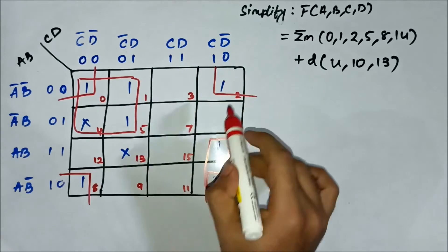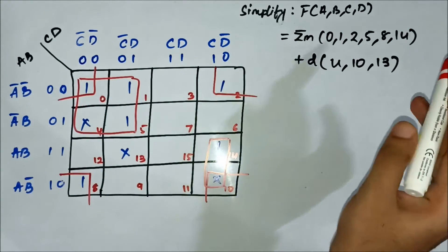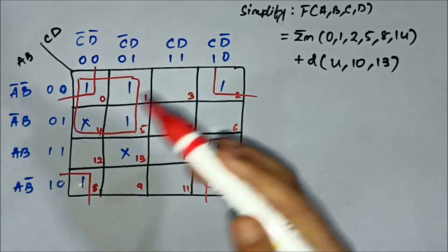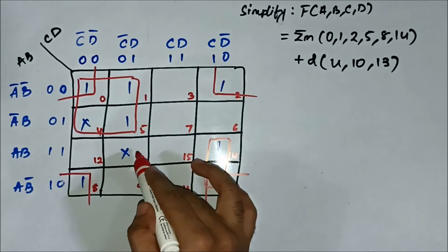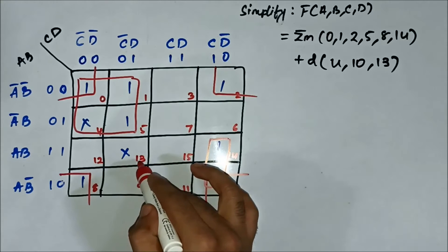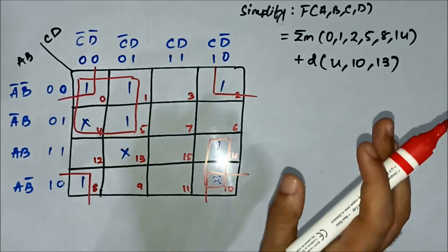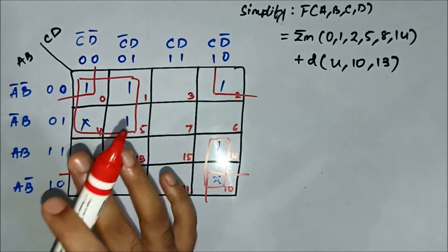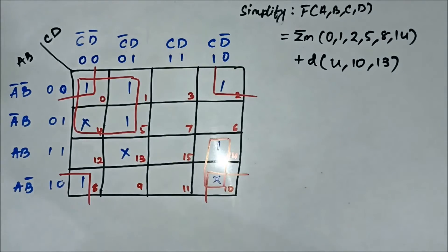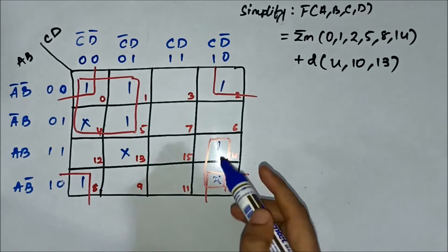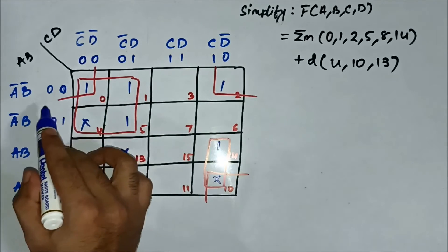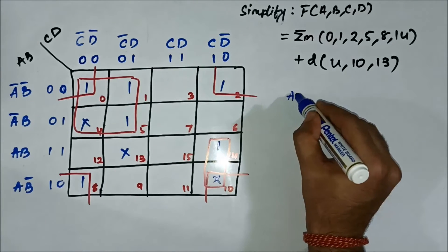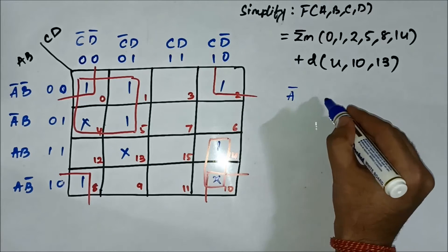All the cells involving 1 under the min-term bracket are grouped and covered. The X-marked cell — cell 13 — is left behind. There is no need to form any group to include this cell; it will remain as it is. Now we have to identify the common variables. For this quad, the common variables are A-bar on the horizontal side and C-bar on the vertical side.